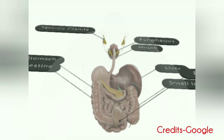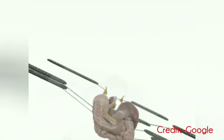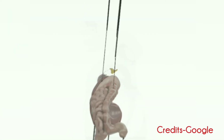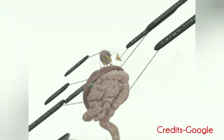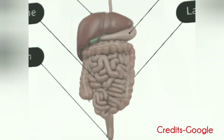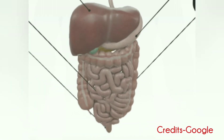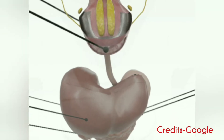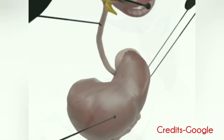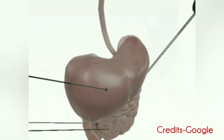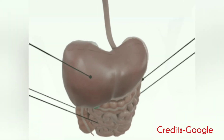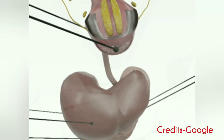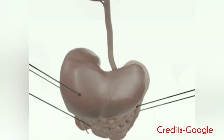Now I am going to talk about the blood supply to the digestive system. The digestive system is supplied by the celiac artery. The celiac artery is the first major branch from the abdominal aorta and is the only major artery that nourishes the digestive organs.